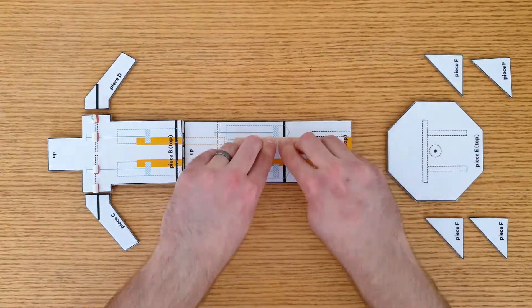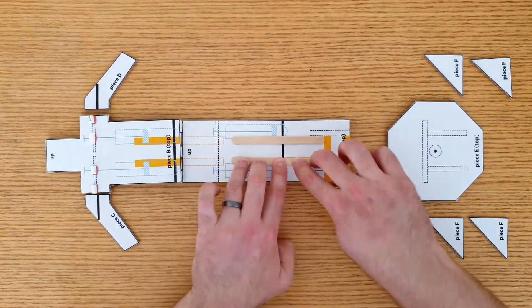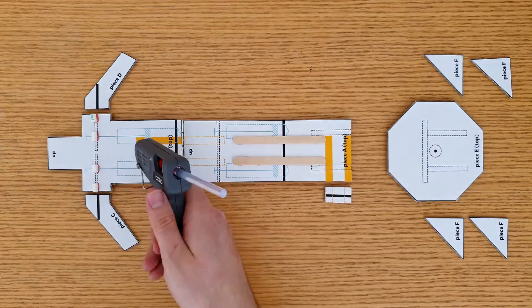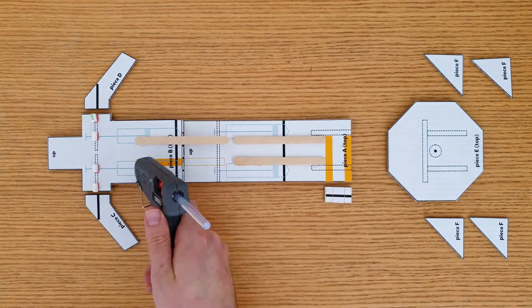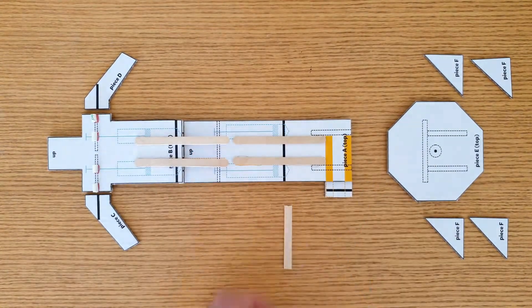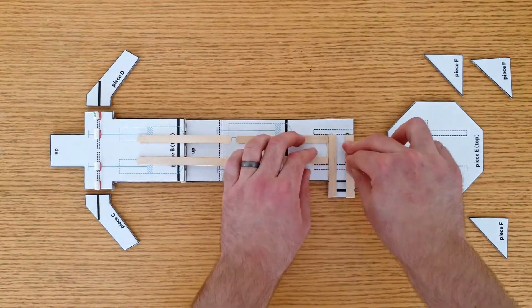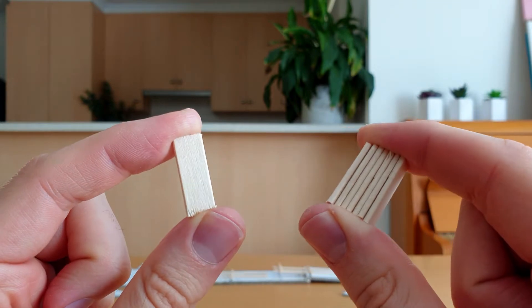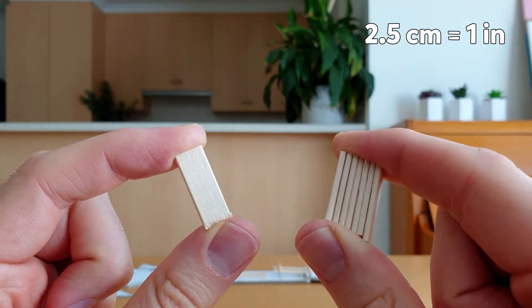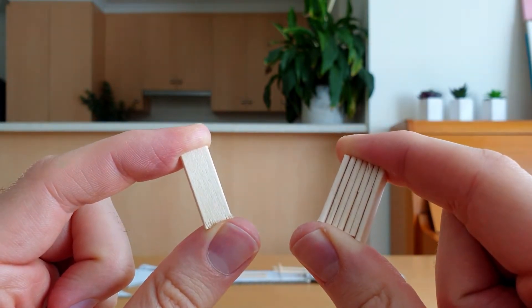Next, cut the pop sticks and place them everywhere you see a yellow rectangle. Be careful with these pop sticks, only glue them down on piece B. Don't forget this bit from piece A, which lets us know how long these pop sticks need to be. At this time, cut 8 pieces of pop stick that are each 2.5cm long. We'll need these for later.